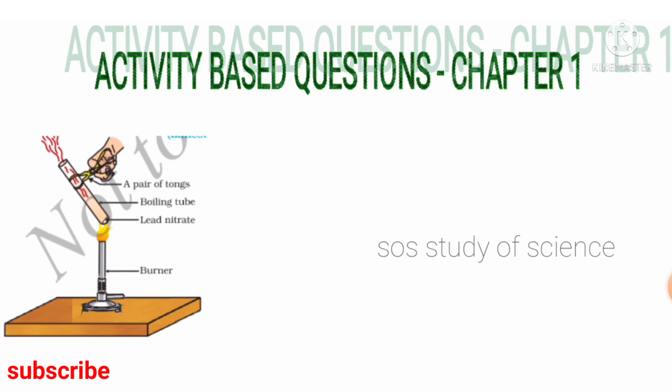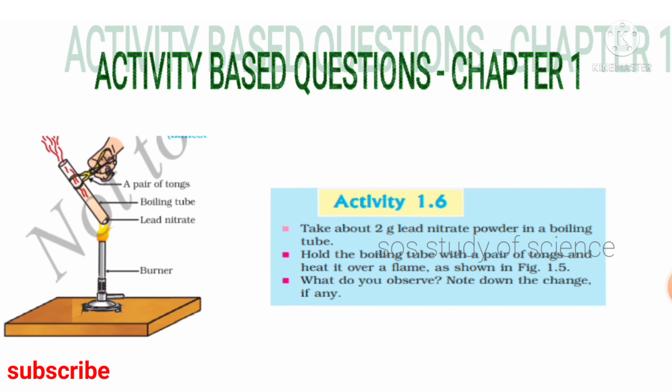Activity 1.6 is an example for the type of decomposition reaction. What is meant by decomposition reaction? Decomposition reaction is a type of chemical reaction in which a single reactant undergoes decomposition to form two or more products.